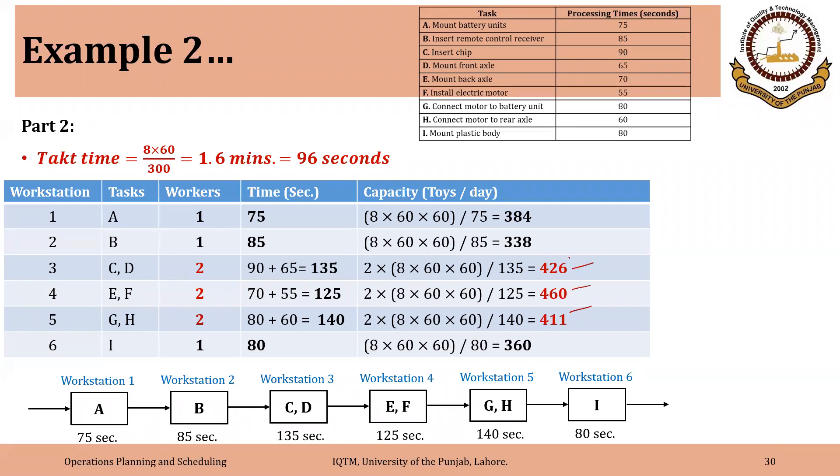So simply the capacity will double. So these are the new capacities and the workstation 2 is the bottleneck. That has the capacity of 338, but that is greater than 300. So we can easily meet the demand.